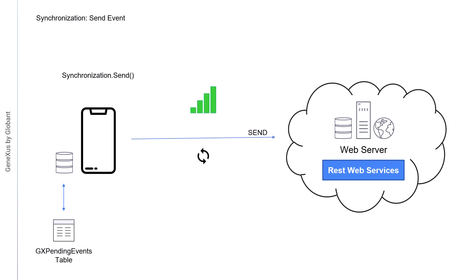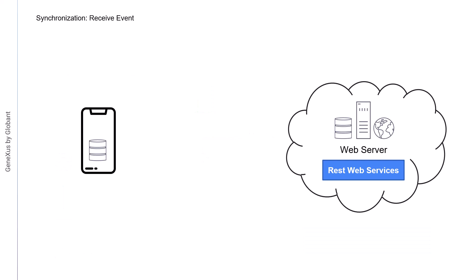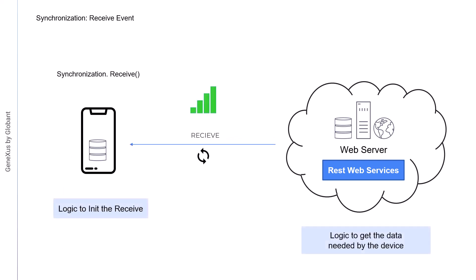When the send operation is started, the client translates the list of all the events with pending status into an SDT with JSON format and then sends it to the server. The GX offline event replicator procedure is programmed in the server, which then reads the SDT and performs the insert, update, and delete tasks following the order of the operations. When the device needs to receive the data changed on the server, the receive process is started by calling a REST service on the server. Then, the device updates the data on the local database.